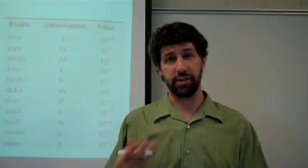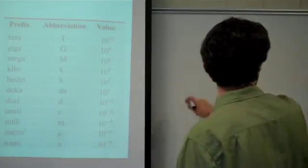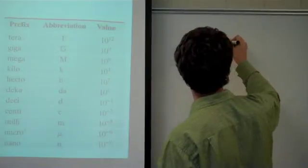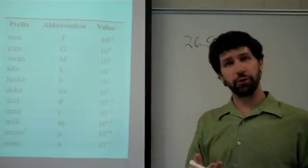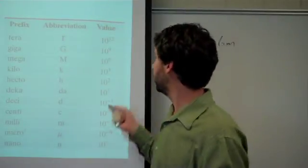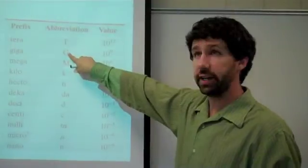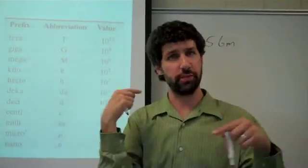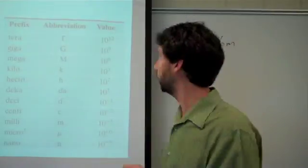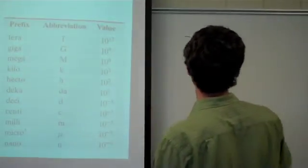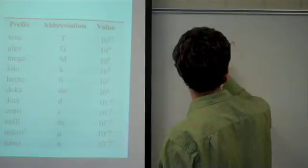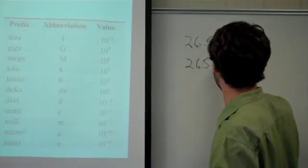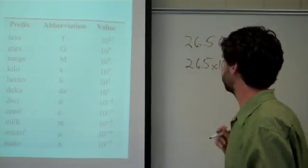Now we're going to start our second example using a really big number: 26.5 gigameters. The first thing to remember is that 'giga,' or G, is replaceable with 10 to the 9th — they're the same thing. So I can take 26.5 and instead of writing a 'giga,' write times 10 to the 9th, and it means exactly the same thing.